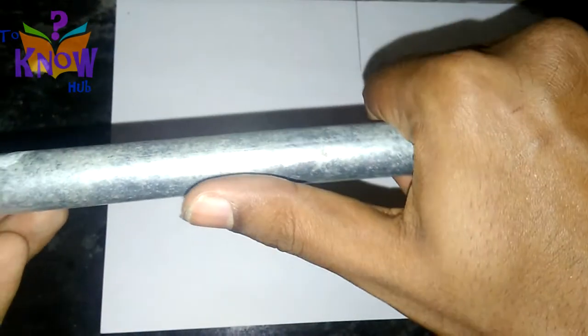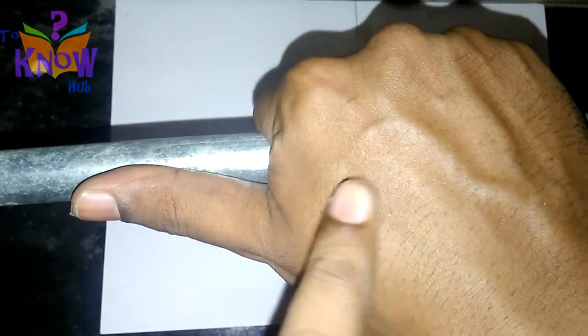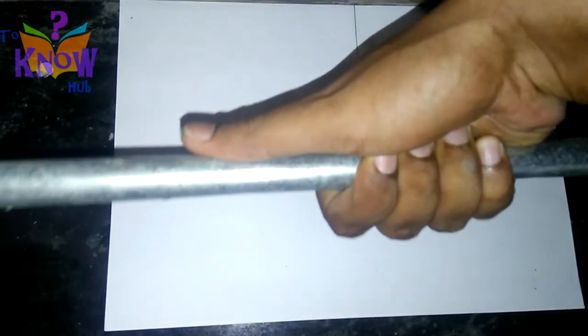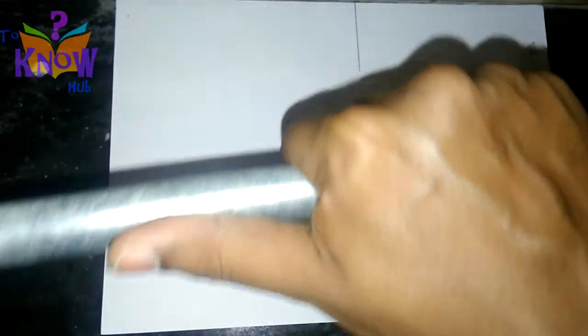Imagine, this is a current carrying conductor. I hold it in my right hand such that the thumb points towards the direction of the current. Then, my fingers will wrap around the conductor in this direction. Now, this is also the direction of the magnetic field. This rule is known as the right-hand thumb rule.